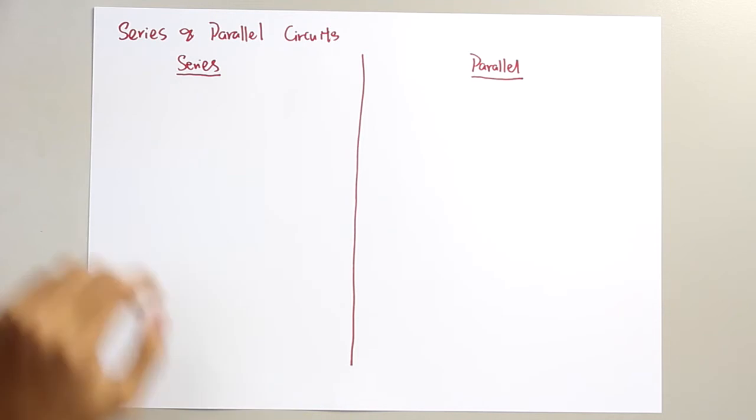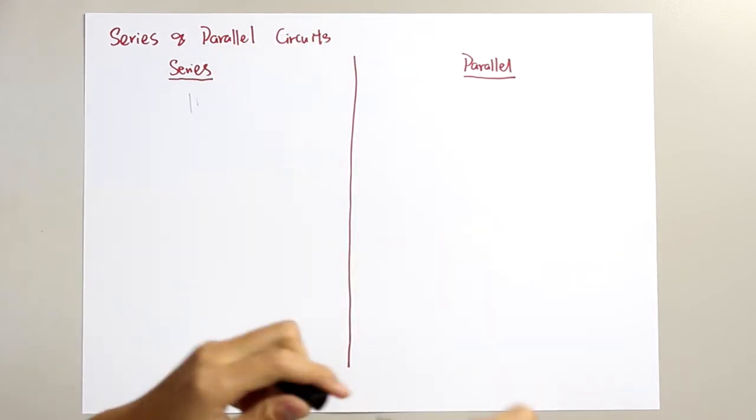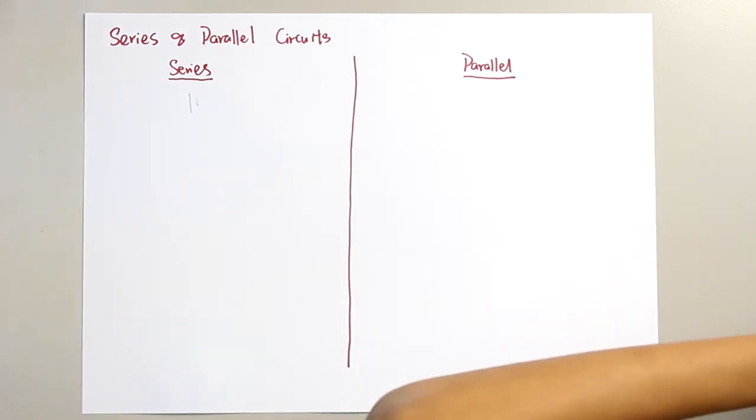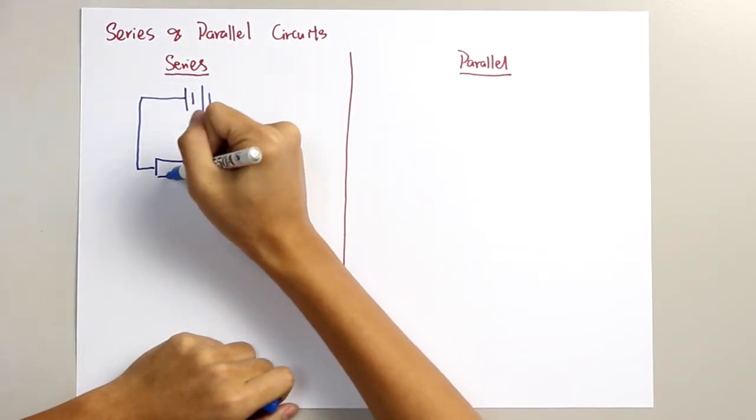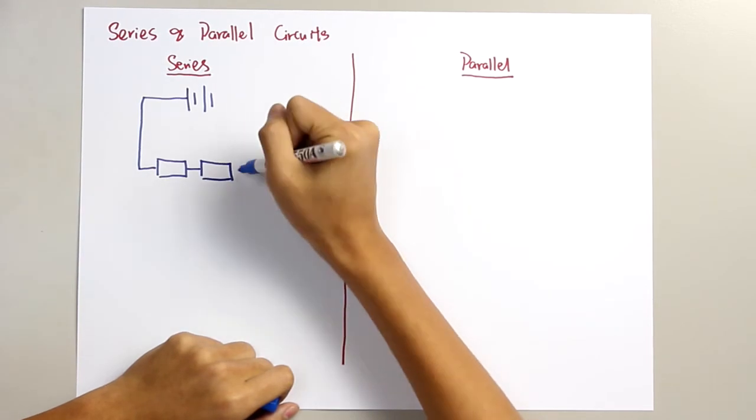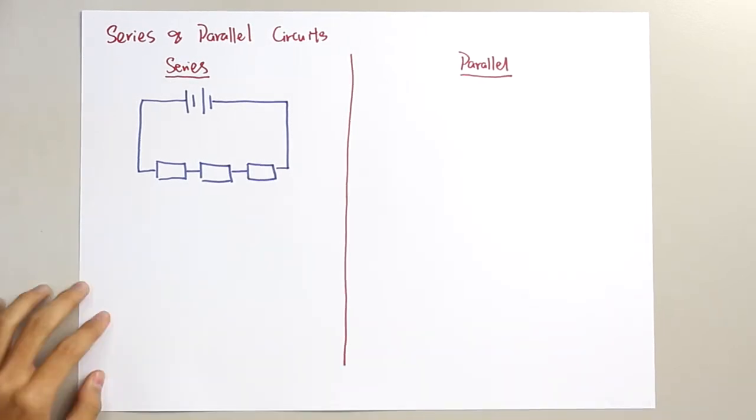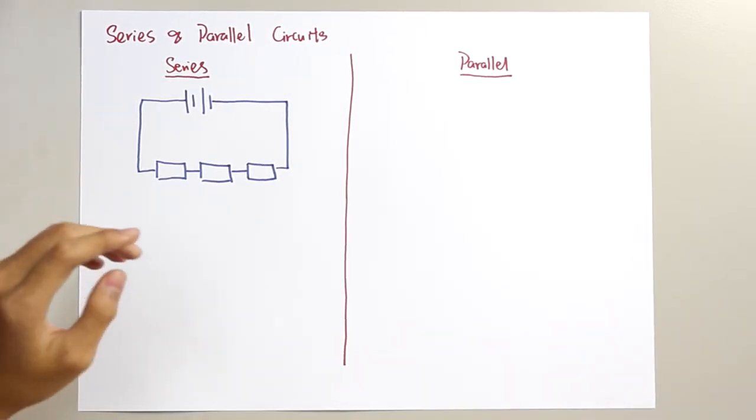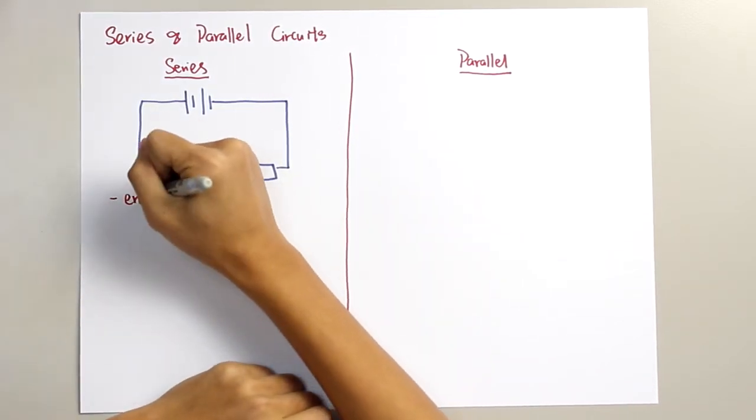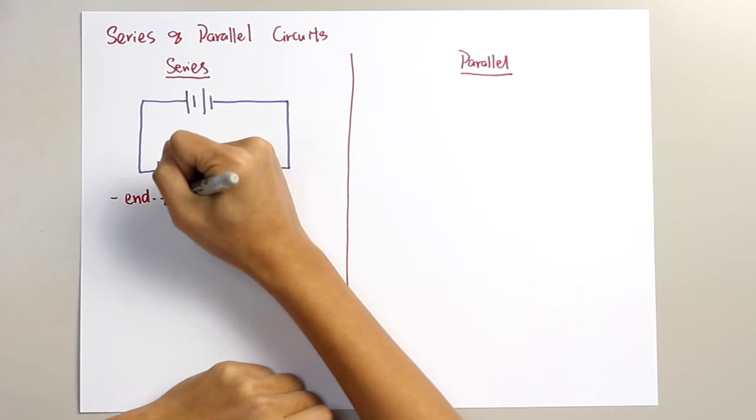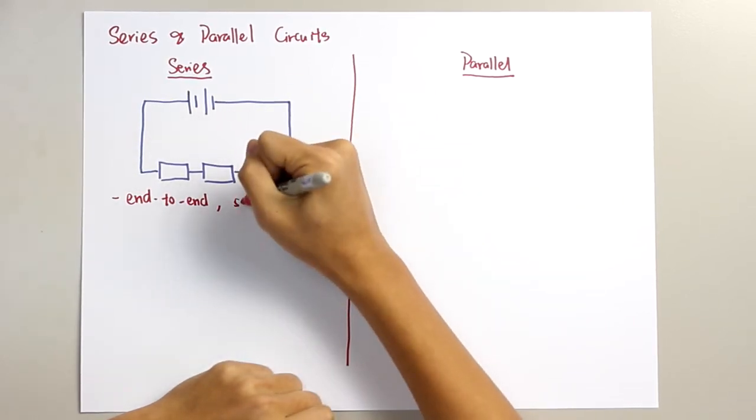For series circuits, this is how the circuit looks like. We can see the components, these three components, they are connected end to end and so that it produces a single path.